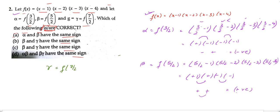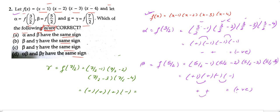For gamma = f(7/2), we get (7/2−1)(7/2−2)(7/2−3)(7/2−4). The signs are: positive, positive, positive, negative. Three positives and one negative gives a negative result overall. So gamma is negative.